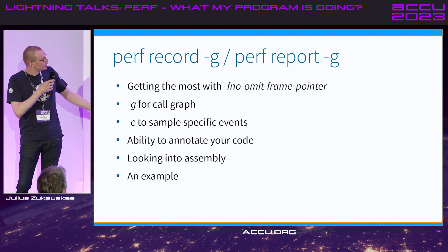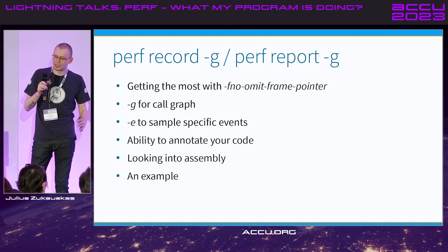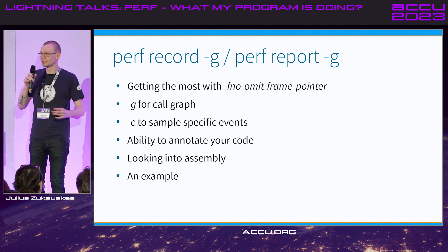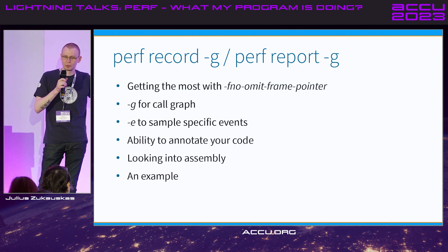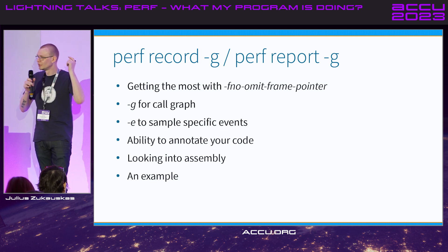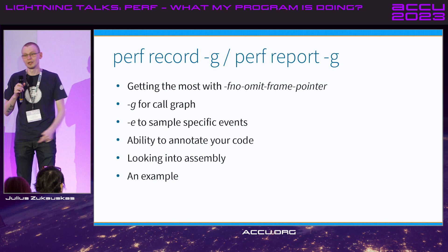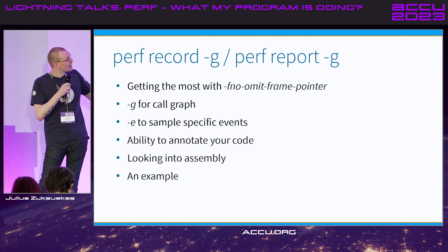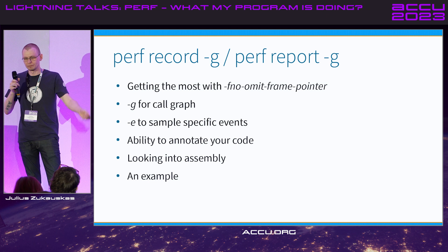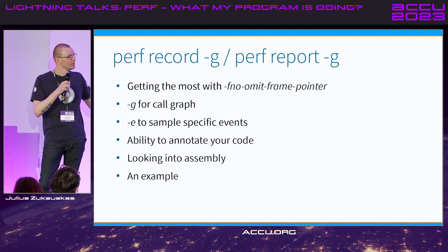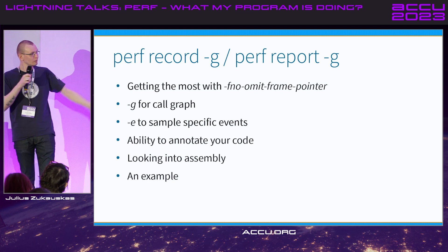Next we look at the record and report, which is about recording a profile while running your application and seeing everything it does. A couple of things to look at: compiling your programs with -fno-omit-frame-pointer, which takes your stack pointer and attaches it to a particular register — it's a bit more expensive but you can actually understand what your program is doing. And -g for call graph. And -e for what kind of events you want to sample — the default is cycles, but you can say I want cache misses, or I want to understand where my front-end stalls.